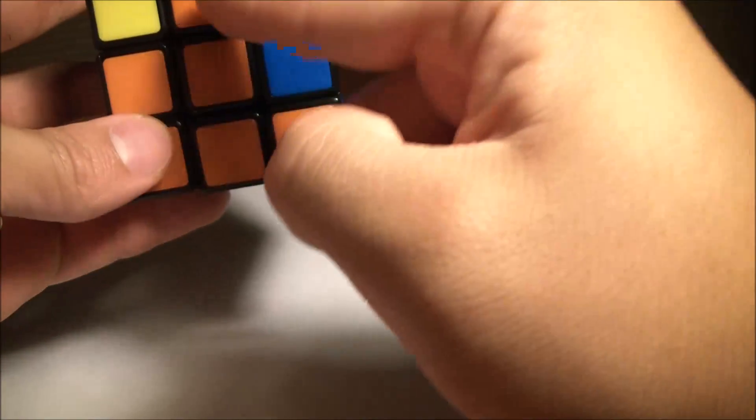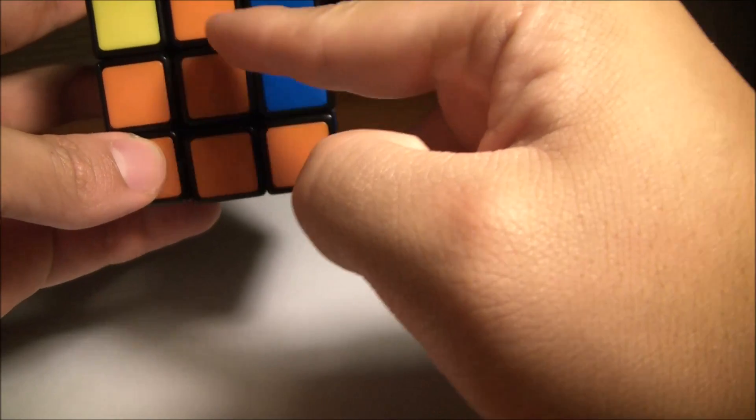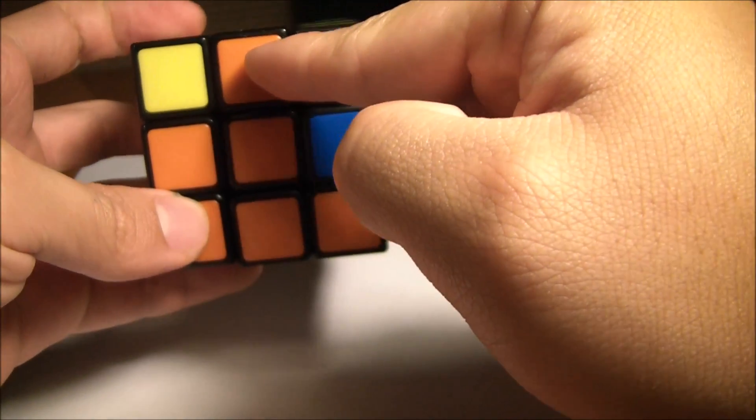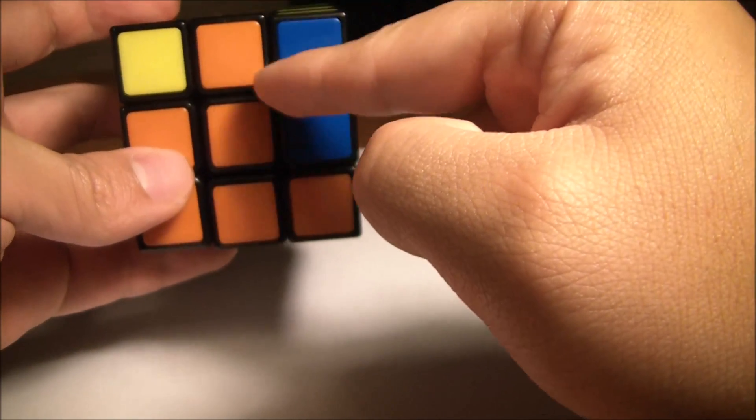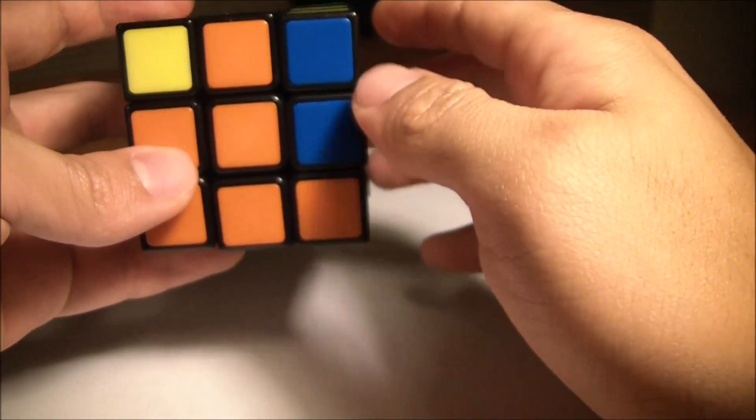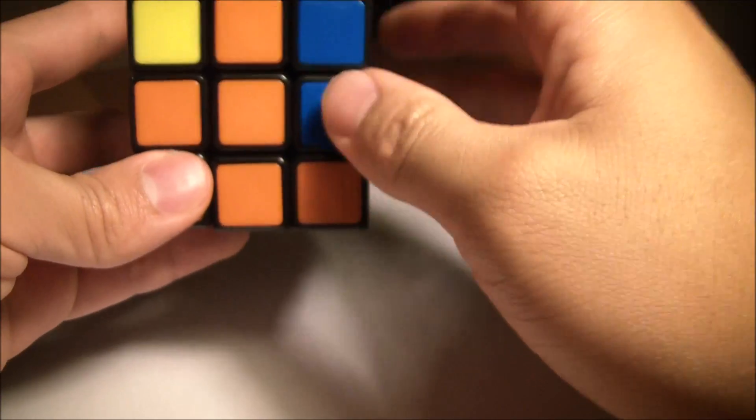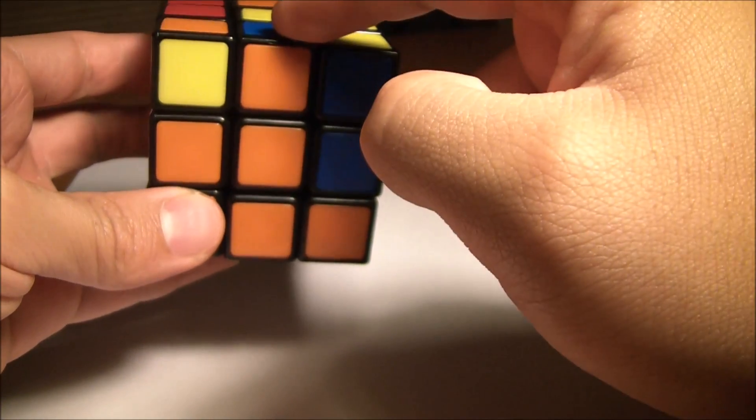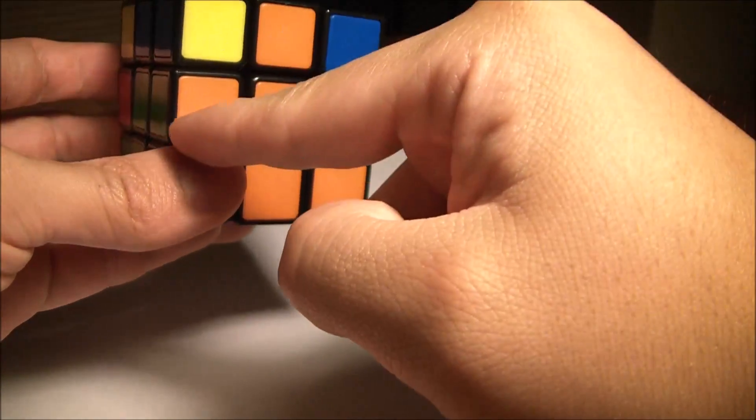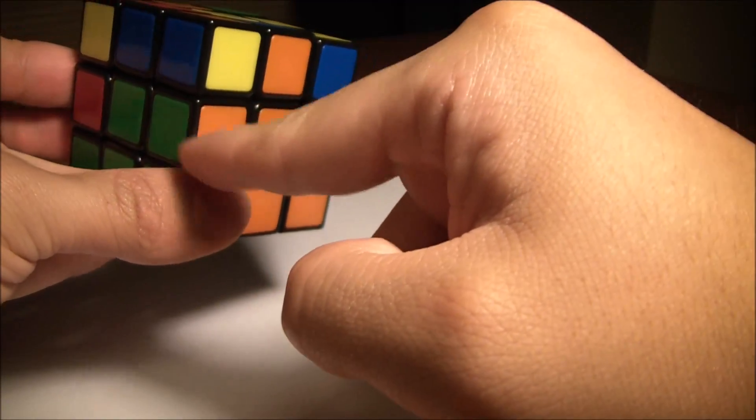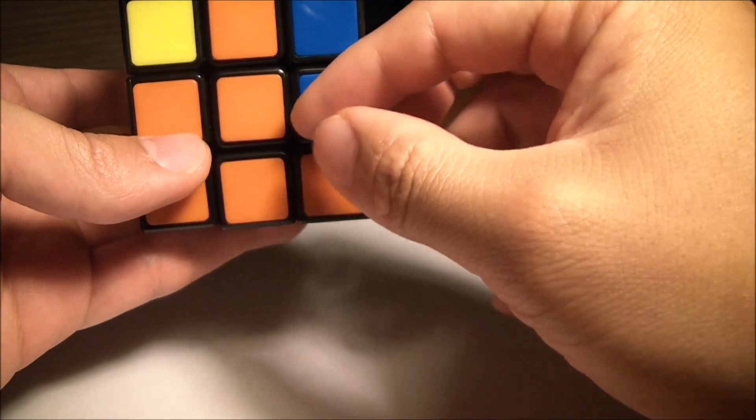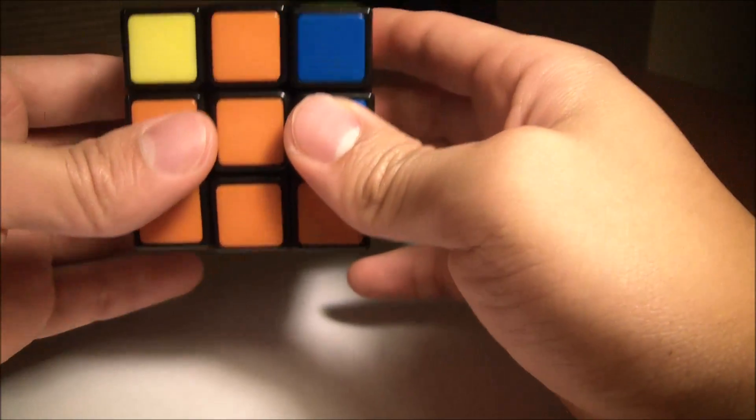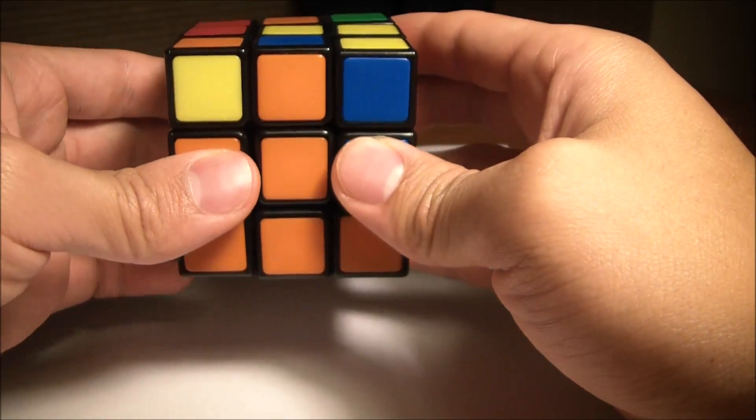However, depending on which direction you take this piece, this middle piece right here, the algorithm will change just a little bit, but relatively the same. You're just doing opposite directions. For instance, if this was an orange and green piece, it would belong right here, but this one already is there. So we're taking this to the right side. And to do the right side, you follow these steps.